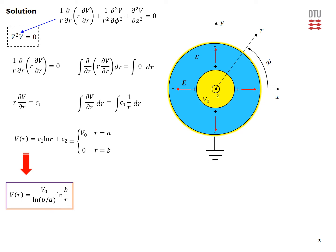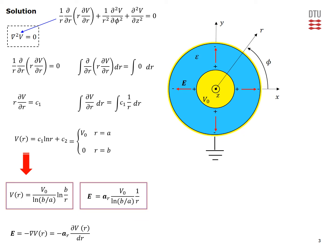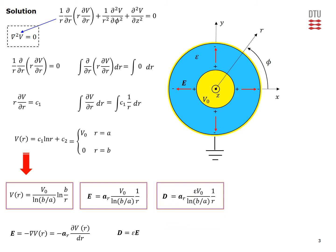This is the result for the potential at any distance in the dielectric material between the two conductors of our coaxial cable. Knowing the potential, we take the negative gradient of the potential — which reduces to the expression shown — to arrive at the result for the electric field intensity. Because the material in our coaxial cable is simple, the relationship between D and E gives us the D field expression.